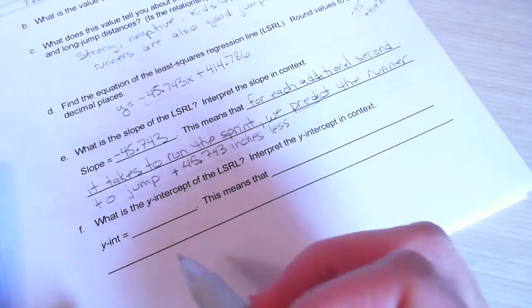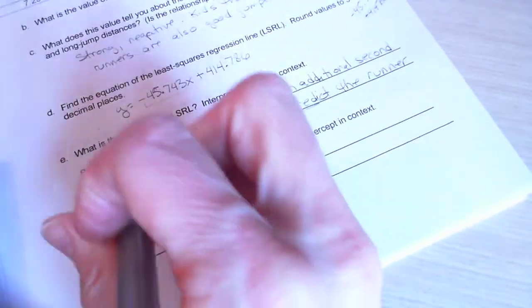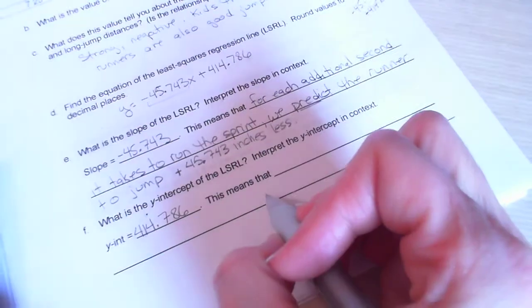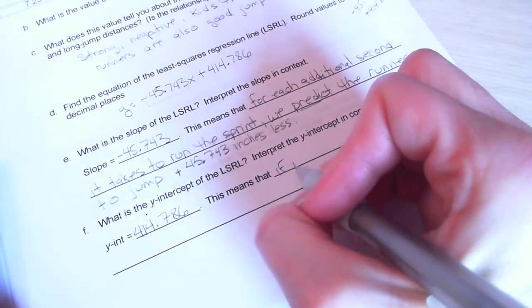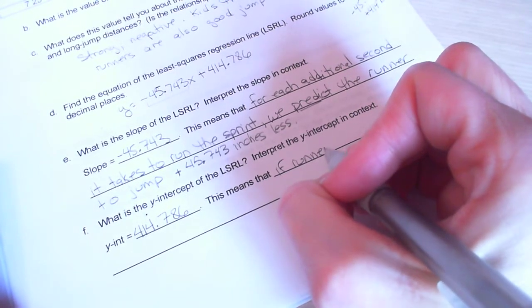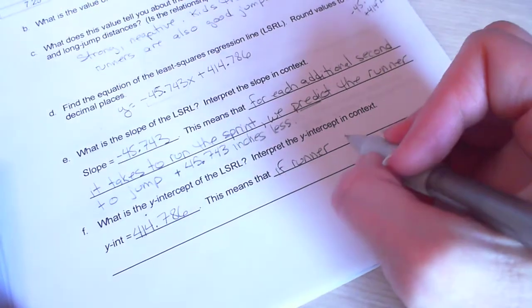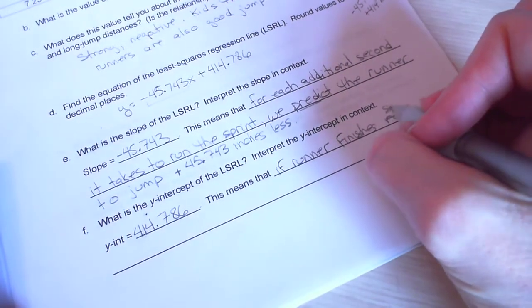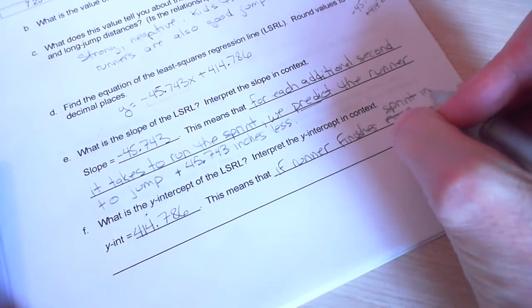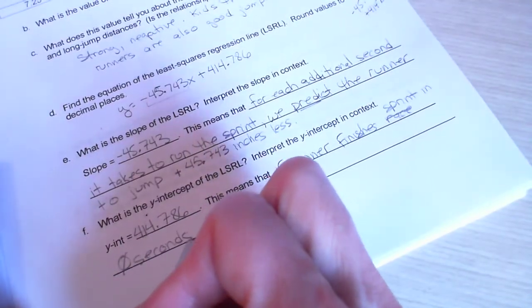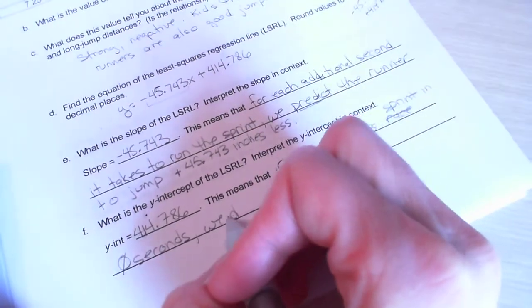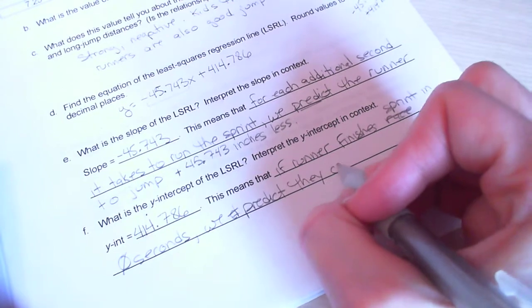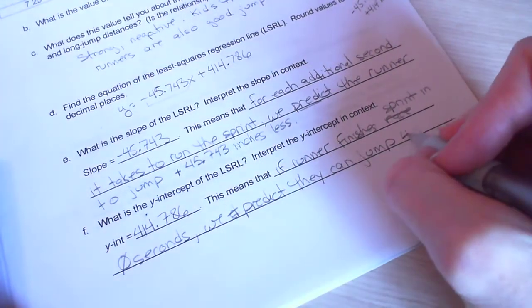And then part f says, what is the y-intercept? Y-intercept is 414, oh, let's write that correctly, 414.786. What does this mean? This means that if a runner finishes sprint in zero seconds,